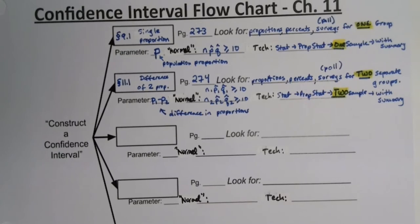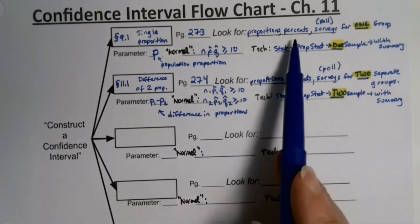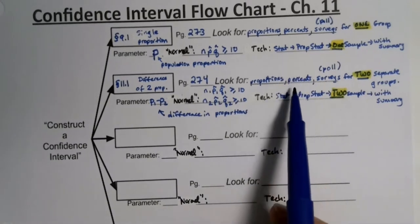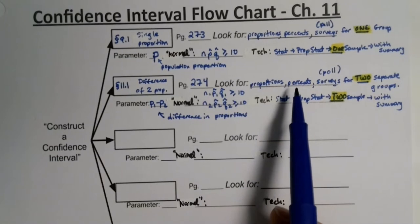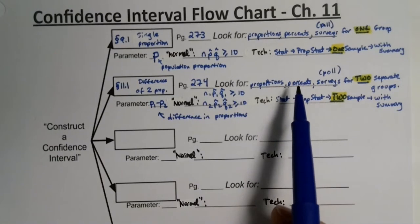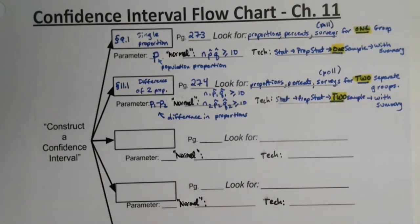One thing to watch out for with proportions and percents: don't confuse the confidence level with the data. Confidence level is always given as a percent, so that's not enough on its own — you need to look for other percents in the problem beyond just the confidence level.